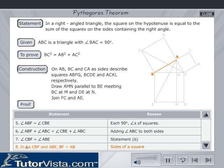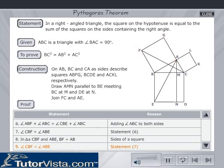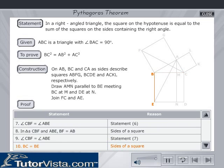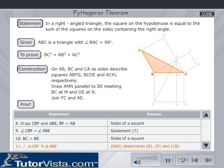BF = AB since they are sides of square BAFG. Angle CBF = angle ABE as proved earlier. BC = BE since they are sides of square BCDE. Therefore, triangle CBF is congruent to triangle ABE by SAS congruency.